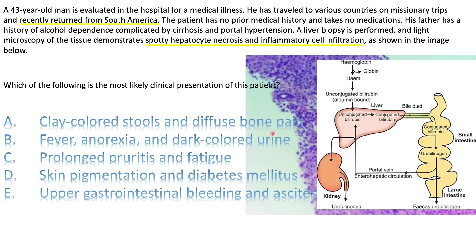Clay colored stools with diffuse bone pain — why would he get diffuse bone pain? Remember, some cholestatic diseases like primary biliary cholangitis are chronic — the patient has it for months to years. When bile is blocked and cannot reach the intestine for a long time, there is malabsorption of fat and fat-soluble vitamins like vitamin D, which can lead to osteomalacia and bone pain. But he doesn't have this; his viral illness is just recent.